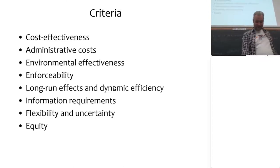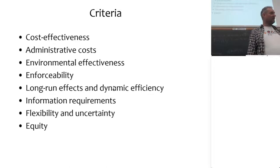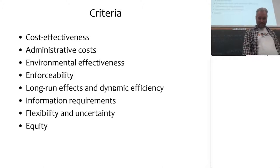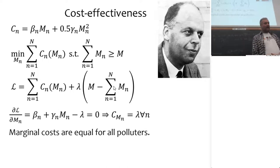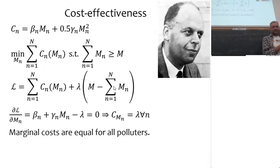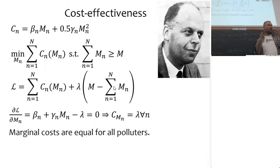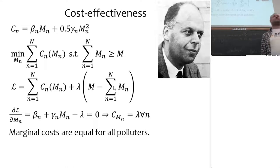Because this is an economics class, I'm going to put a bit more structure on the first criterion: cost effectiveness. Let's consider a social problem where we have polluters denoted by n, running from 1 to capital N. They have a cost of emission reduction given by the function beta-n times m-n plus one-half times gamma-n times m-n squared, where m is emission reduction.